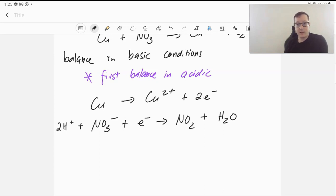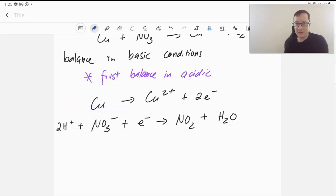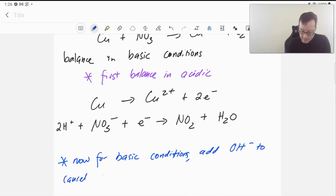What we want to do now is add hydroxide to cancel out the H+. We're going to pretend we didn't use H+, although it's a lot easier to balance with H+. So now, for basic conditions, we're going to add OH- to cancel all H+, adding to both sides. For the first half reaction, it doesn't matter—there's no hydrogens or oxygens in there, so it's easy.